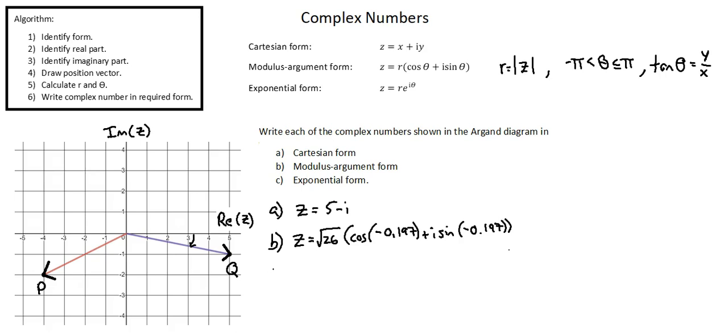And C, exponential form: Z equals square root 26 times e to the power of negative 0.197i. These are the three forms of representation of the complex number represented by vector OP.